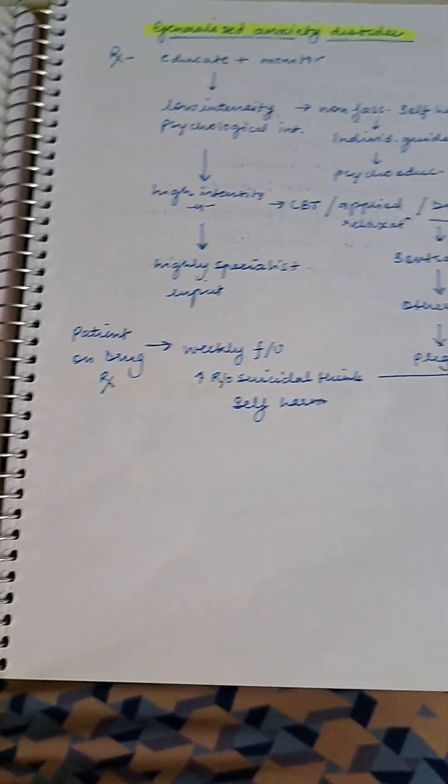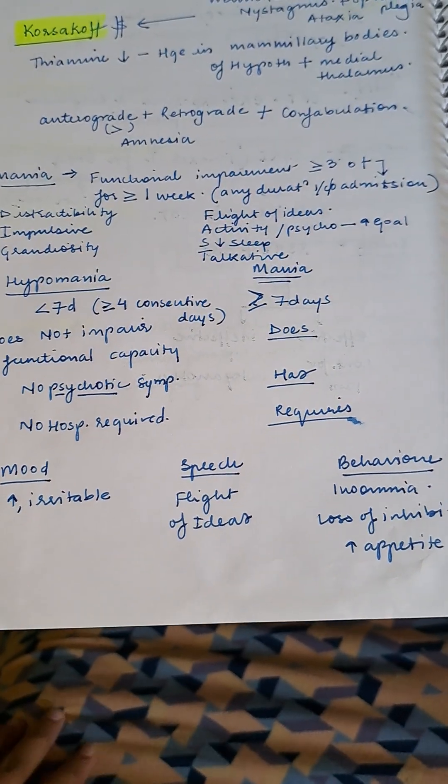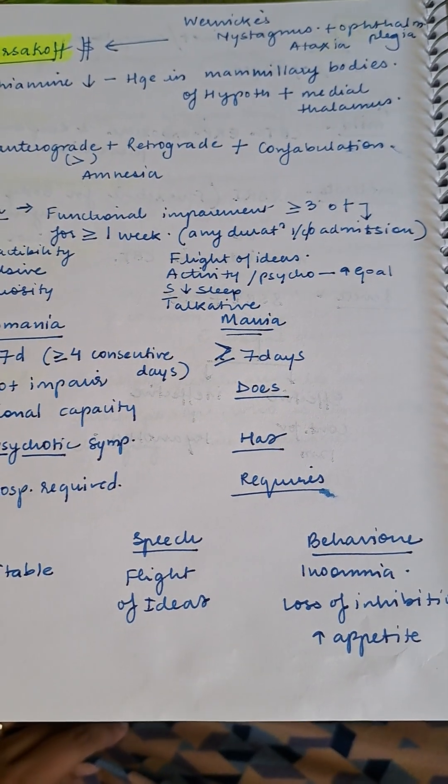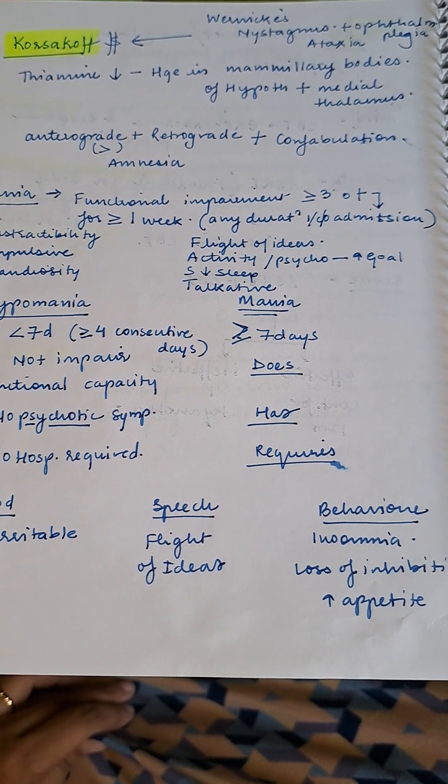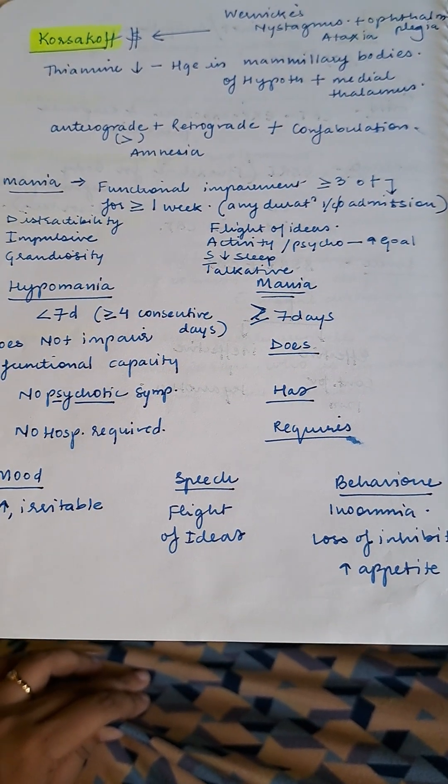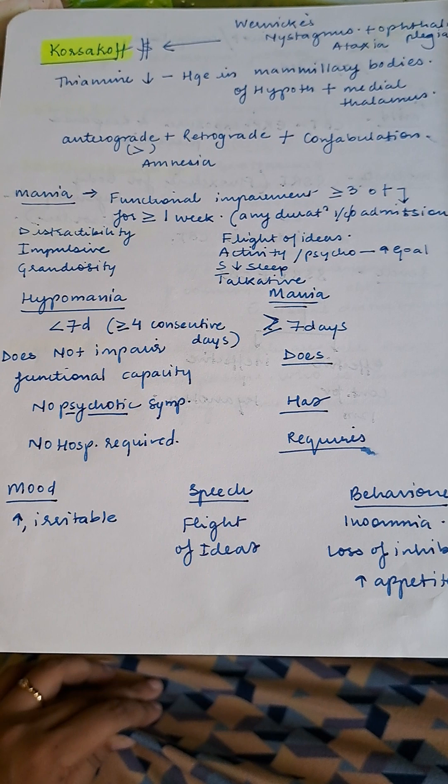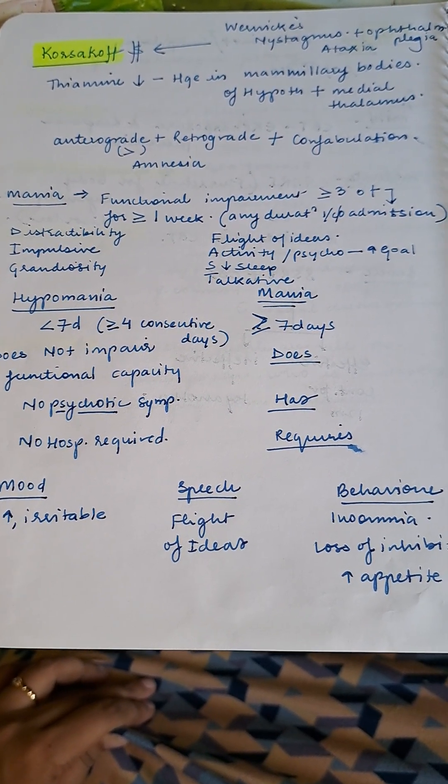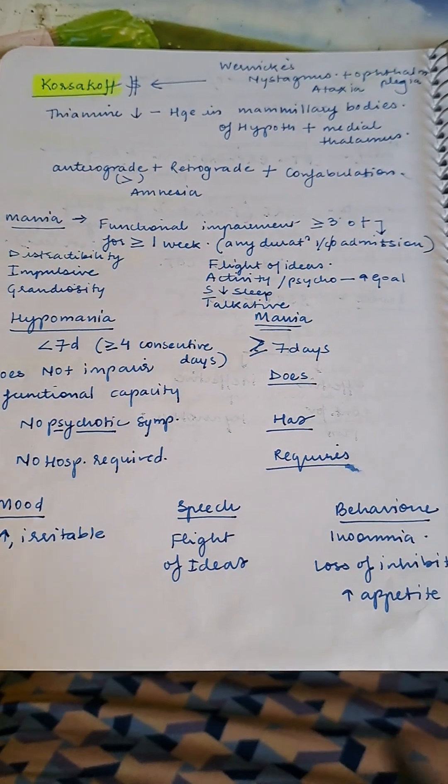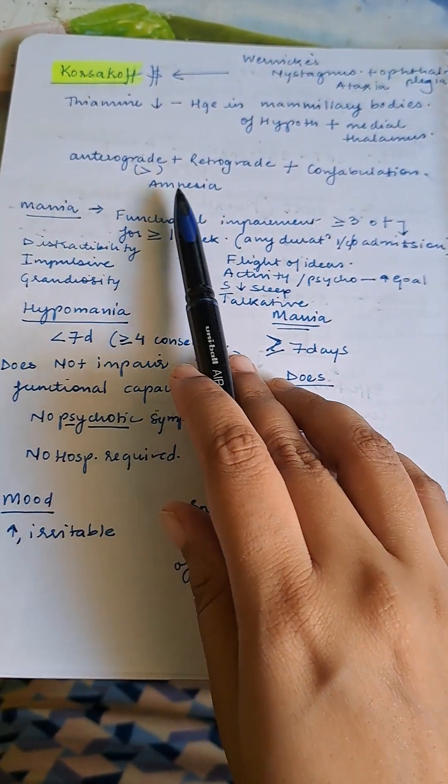Korsakoff syndrome. Patients with Wernicke syndrome who have nystagmus, ophthalmoplegia, and ataxia will eventually lead to Korsakoff. There's thiamine deficiency and hemorrhage in mammillary bodies of hypothalamus and medial thalamus. Anterograde plus retrograde amnesia and confabulation.